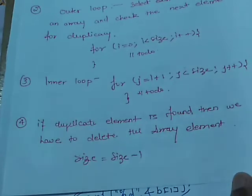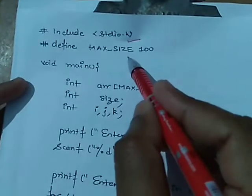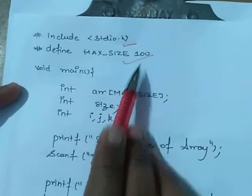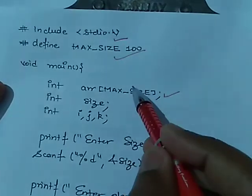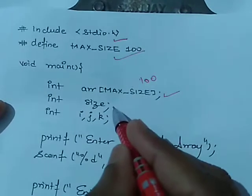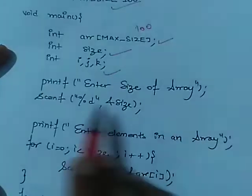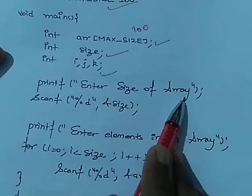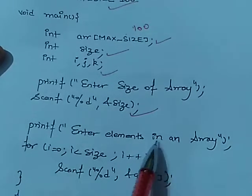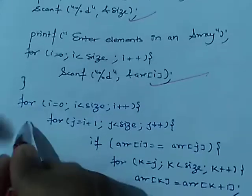Now let us discuss the program structure. We have to include a header file, and here we have defined a macro: maximum size equal to 100. In the main function we have declared an array of size 100, a variable named size, and three variables i, j, k. First, enter the size of the array — how many elements you want. Then enter the elements one by one: for(i=0; i<size; i++) with scanf("%d", &arr[i]).